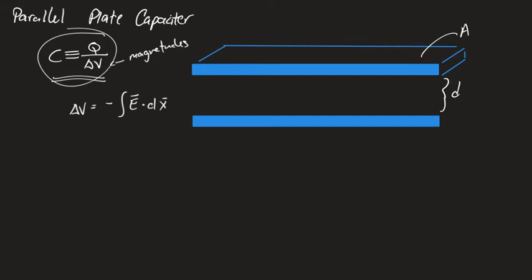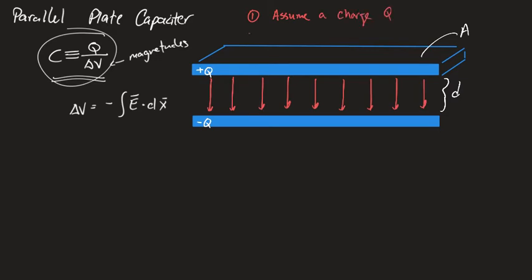So we start step one by assuming the plates are charged to a value of Q — just a random value, but we assume the plates are already charged. Based on that, we expect that an electric field has been established between the two plates. Step two is to calculate the potential difference due to that charge.